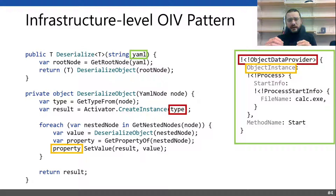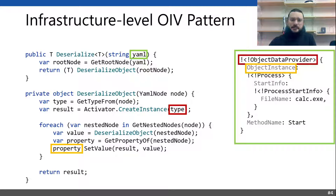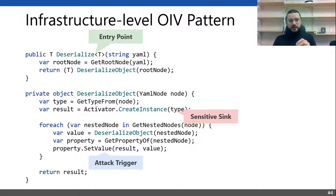Here is an example of the ObjectDataProvider class of .NET framework that exploits a property setter to execute a process start method. Methods like a property setter, I call magic methods in deserialization security attacks. So we have the same triple in the object injection pattern: entry point, sensitive sink, and attack trigger.